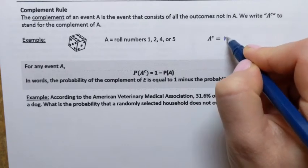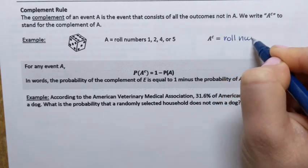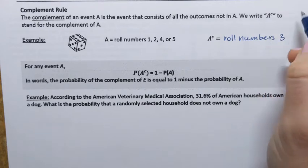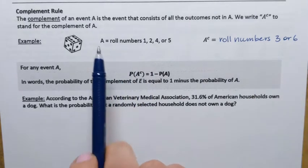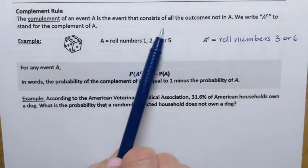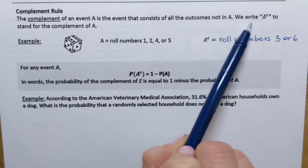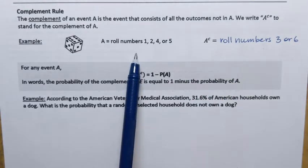Roll numbers 3 or 6, that's going to be the complement. Once again, the complement of one event is going to be another event that consists of all outcomes that are not in the first one.